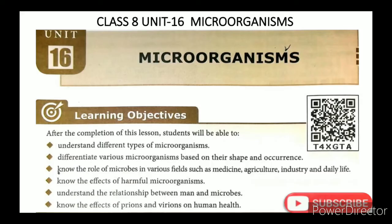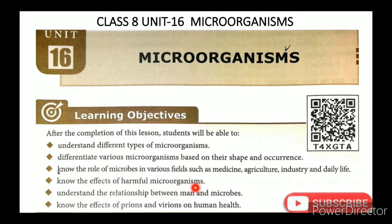Microorganisms. In this lesson, the learning objectives are: Understand different types of microorganisms; differentiate various microorganisms based on their shape and occurrence; know the role of microbes in various fields such as medicine, agriculture, industry, and daily life; know the effects of harmful microorganisms; understand the relationship between man and microbes; and know the effects of virions on human health.